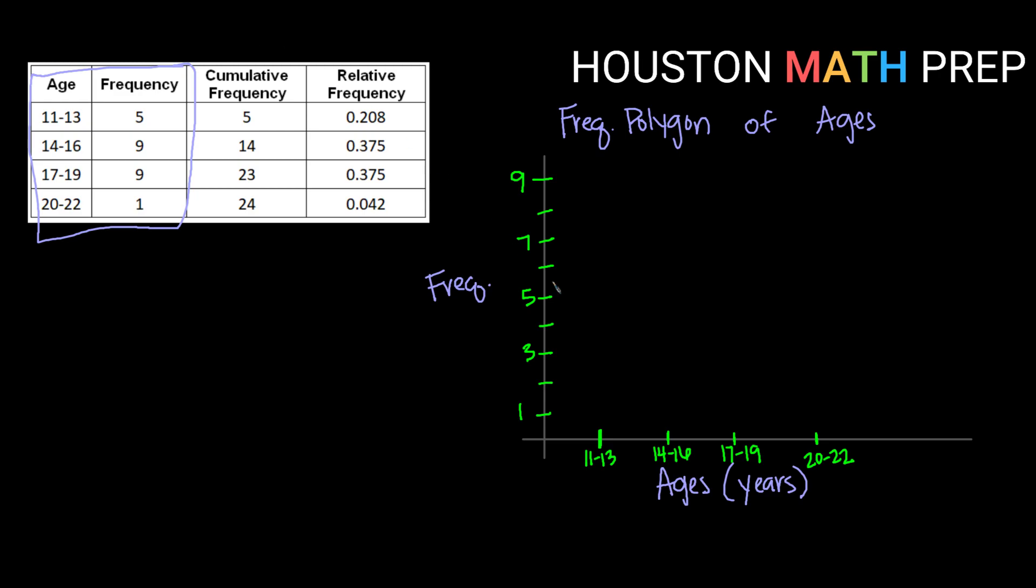So adding the actual polygon portion above the 11 to 13, I'm going to graph my frequency for that class, which is 5. So I'm going to go to 5 and I'm going to put a dot on my graph. I'm going to then go to my next class, 14 to 16, and place a dot at its frequency right above my tick mark there. So there's 9. Next one, 17 to 19, also has 9 as its frequency. So I'm going to go ahead and put my dot there. And then my last one has a frequency of 1, so way down here, right above my tick mark at a height of 1.